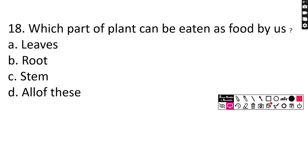Number 18. Which part of plant can be eaten as food by us? A. Leaves, B. Root, C. Stem, D. All of these. Correct answer is option D, All of these.